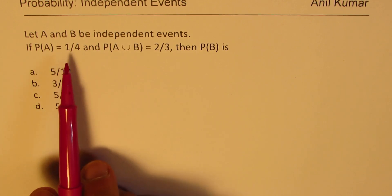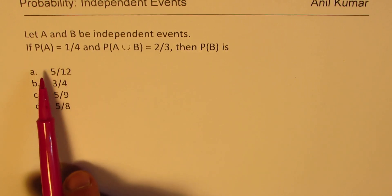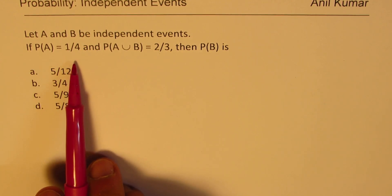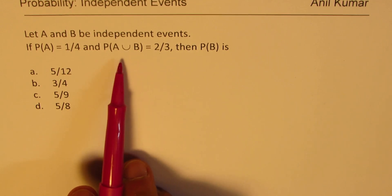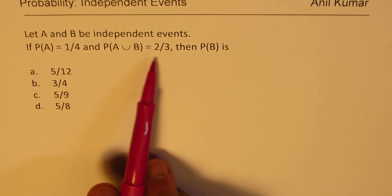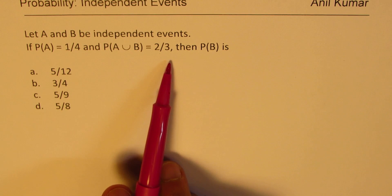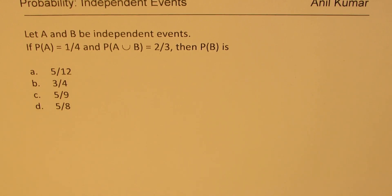Here is a question based on independent events. Let A and B be independent events. If probability of A is 1 over 4 and probability of A union B, that means A or B is 2 over 3, then probability of B is what? You are given four choices. Now, this is one of the most difficult questions in this series. Let's try to understand.